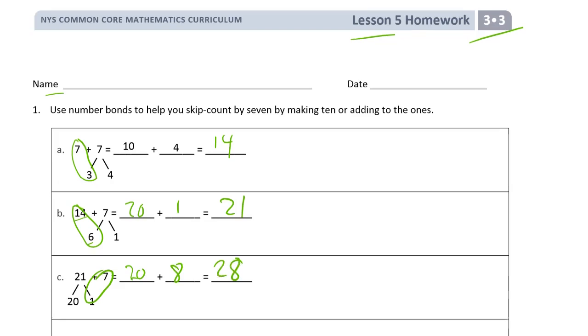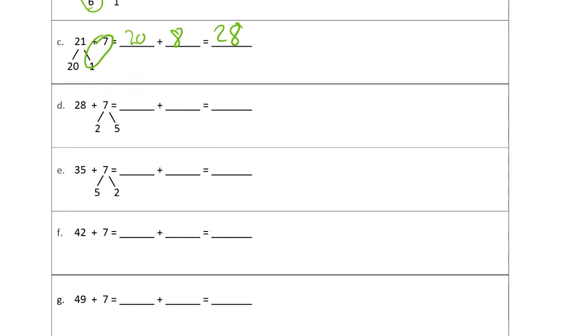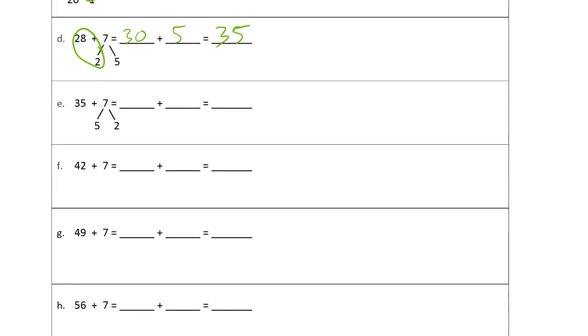And guess what we need when we add to 8? We need 2 to make the next 10. So there we go. 30 plus 5, 35. And you know what 35 needs to make the next 10? It needs another 5. So we have 40 plus 2, 42.